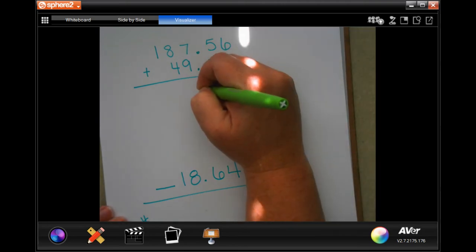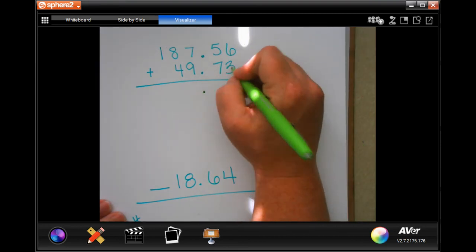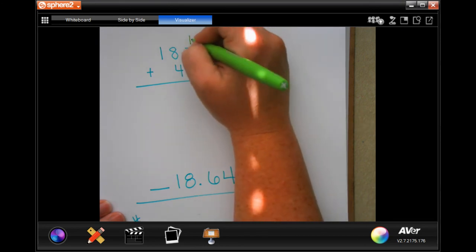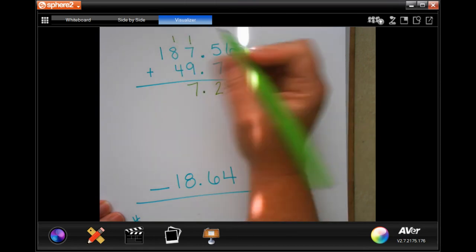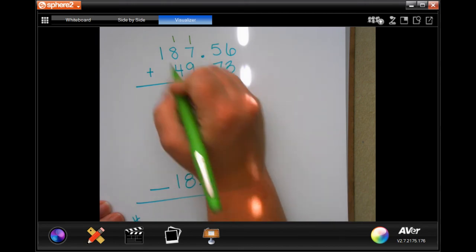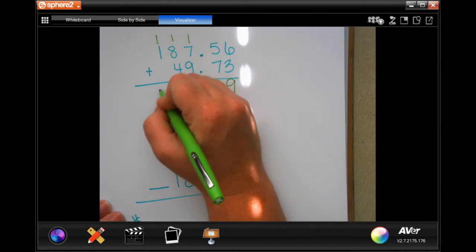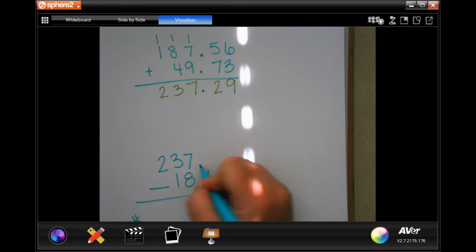So first, let's find out how much she has now. Our first step is to drop down our decimal. Now, 6 plus 3 is 9. 5 plus 7 is 12. Carry that 1. 1 plus 7 is 8. Plus 9 more is 17. Carry the 1. 1 plus 8 is 9. Plus 4 more is 13. Carry our 1. And 1 plus 1 is 2. So now, she has $237.29.